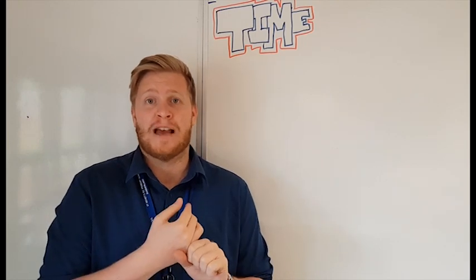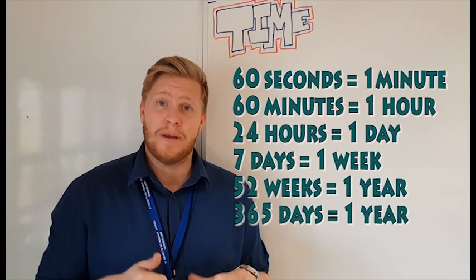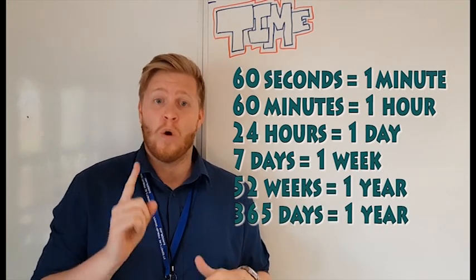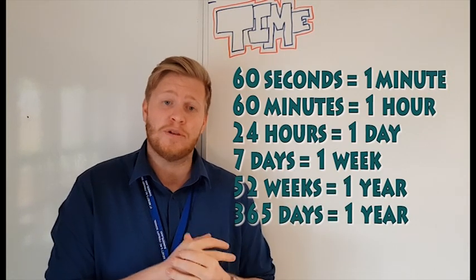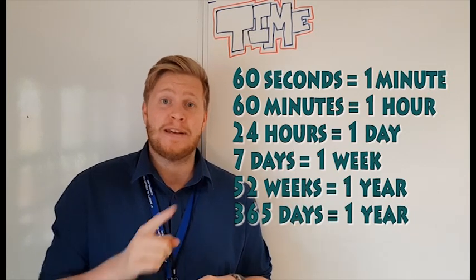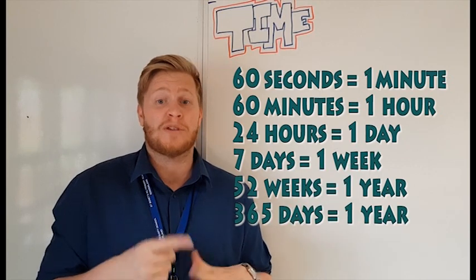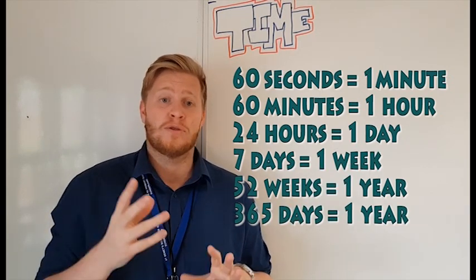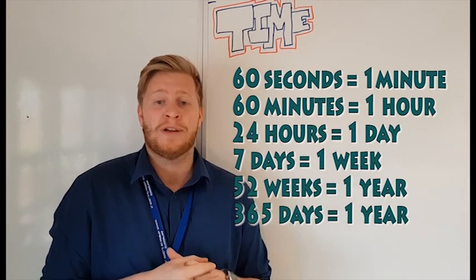We start off with a second which is one of our smallest units of time that we use day to day. There are 60 seconds in a minute, 60 minutes in an hour, in one day we have 24 hours, there are 7 days in a week and there are 52 weeks in a year so that means we've got 365 days in a full year.